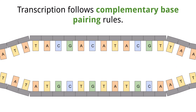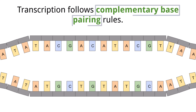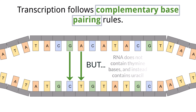The process of transcription follows the complementary base pairing rules that we already know, like guanine pairs with cytosine and adenine pairs with thymine, with one exception. RNA molecules do not carry the base thymine, and instead carry the base uracil.